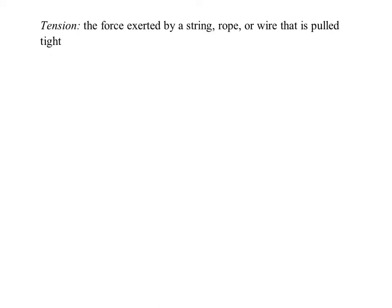Tension is a force exerted by a string, rope, or wire that is pulled tight — meaning there is tension in the wire, or it's taut. What's happening is that the rope or string transmits a force from one place to another. A string is defined as something that transmits a force.